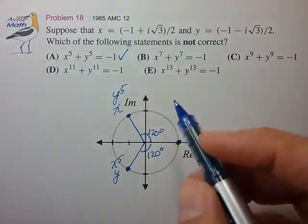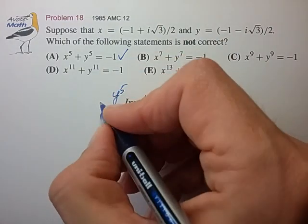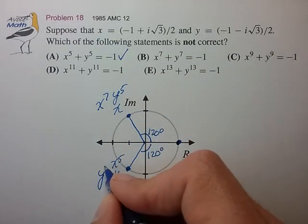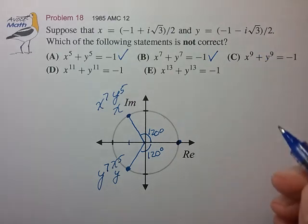Going a bit further. x to the seventh. x to the fifth. x to the sixth. x to the seventh. Lands us here. Likewise, y to the seventh. Lands down here. Those two again add to -1. So that's correct.